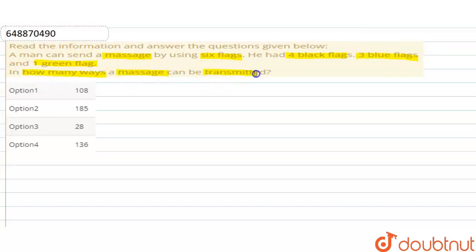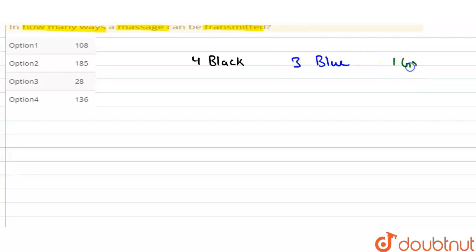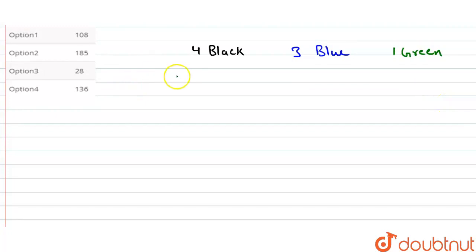So, we need to find how many ways a message can be transmitted. First of all, let's talk about the flags available: four black flags, three blue flags, and one green flag. Now, first of all, let's talk about using six flags.